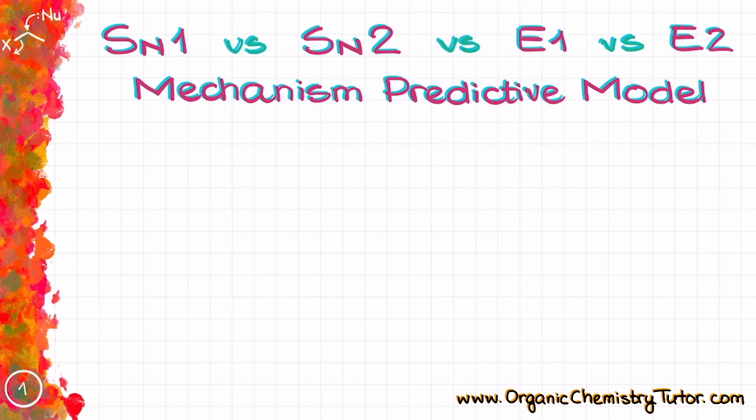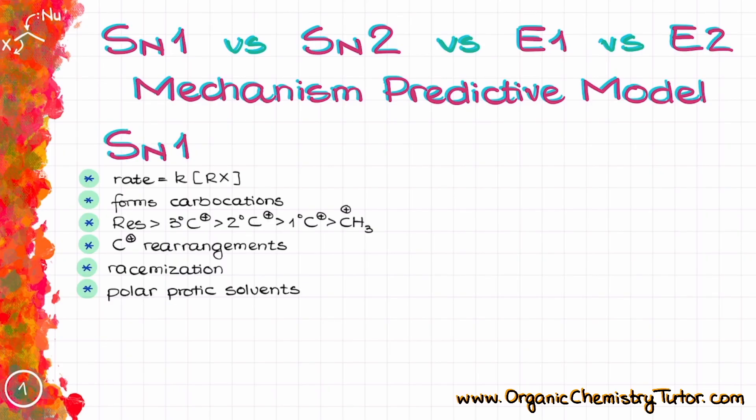Let's start by quickly reviewing the important features of each mechanism. The SN1 reactions are unimolecular reactions and their rate only depends on the concentration of the substrate, which is typically the alkyl halide. The rate determining step in the SN1 reaction is the carbocation formation, and carbocations are the major source of all troubles with the SN1 reactions.